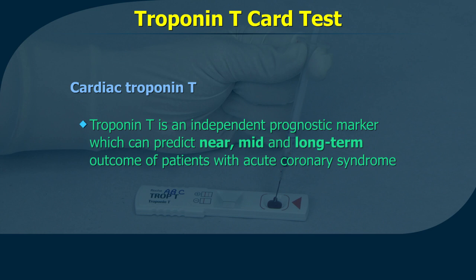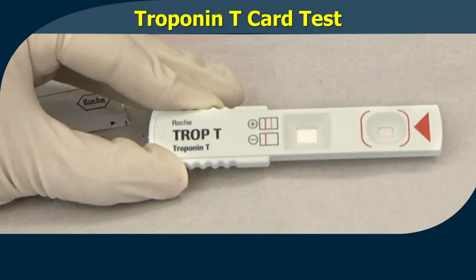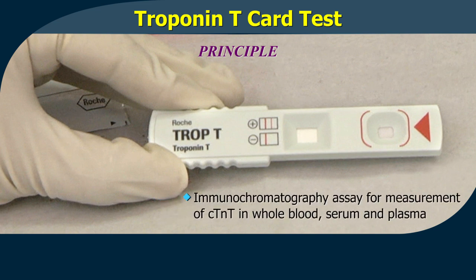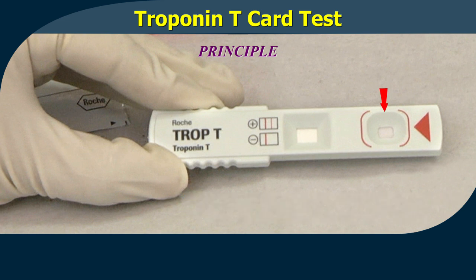Troponin T is an independent prognostic marker which can predict the near, mid, and even long-term outcome of patients with acute coronary syndrome. The troponin T rapid test is an immunochromatography assay for measurement of cardiac troponin T in whole blood, serum, and plasma. When a sample is applied into the sample well,